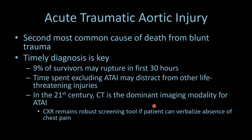Acute traumatic aortic injury is the second most common cause of death from blunt trauma, number one being intracranial injuries, and timely diagnosis is key. About 9% of survivors may rupture within the first 30 hours. We have to make this diagnosis right away. Time spent excluding acute traumatic aortic injury may distract from other life-threatening injuries.